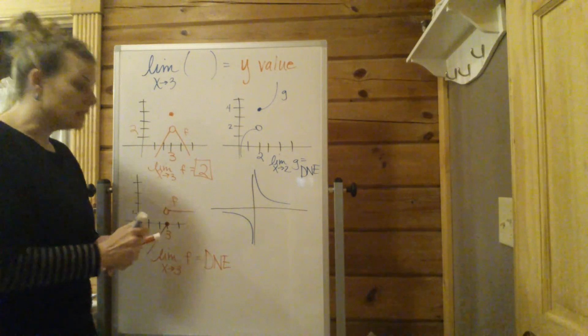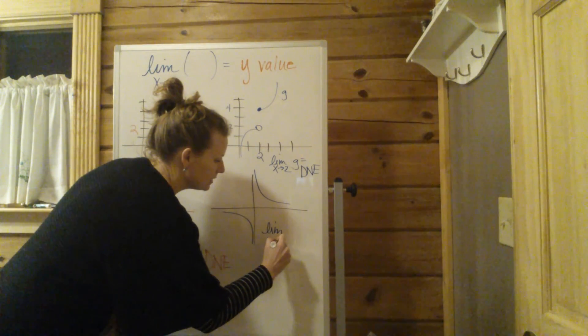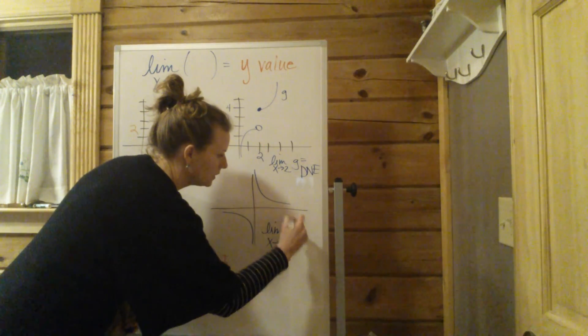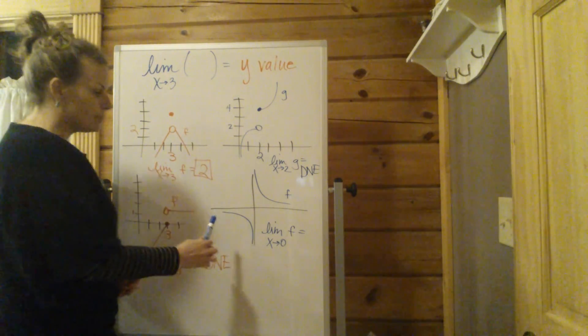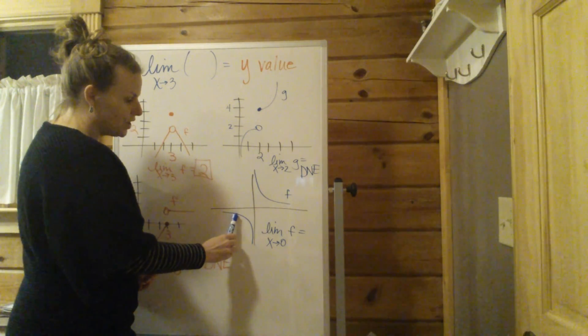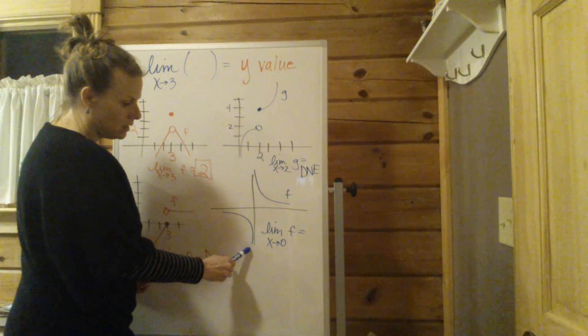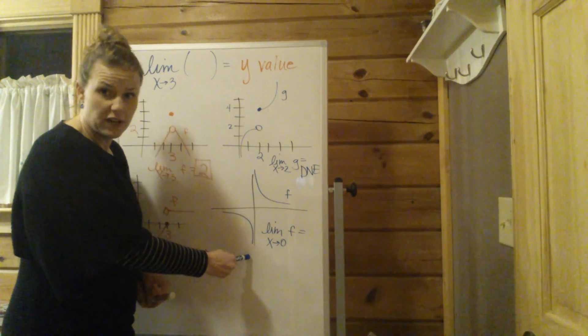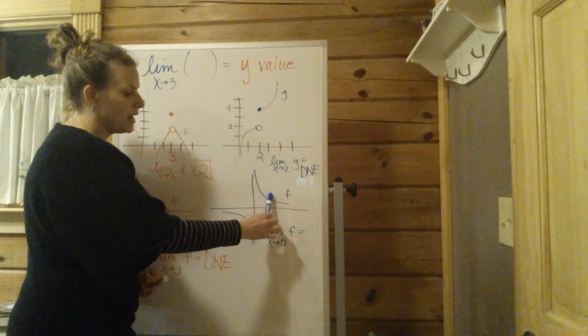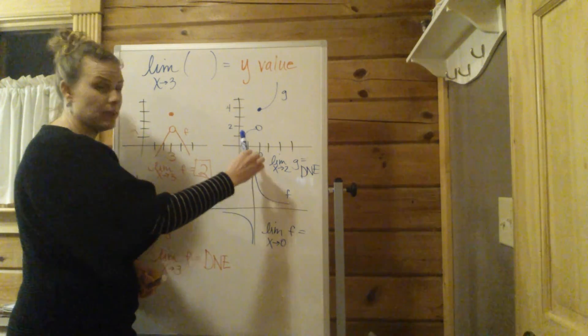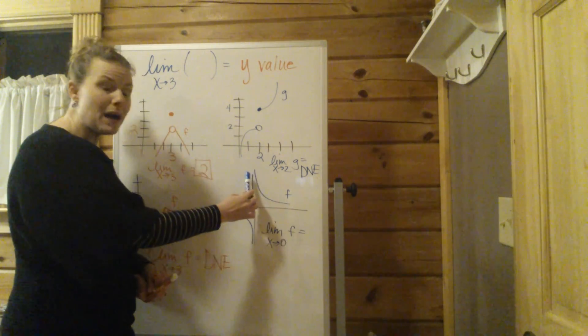Let's say the limit, this would be the limit as x approaches 0 of this function. So the limit as x approaches 0 from the left, this curve, as we're getting close to 0, is going down and down and down to negative infinity. It's going to go down forever. But as we're approaching 0 from the right, this curve is actually going up and up and up. It's increasing. The y values are increasing to positive infinity.